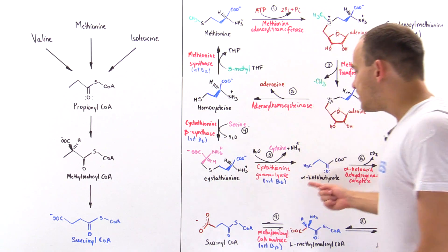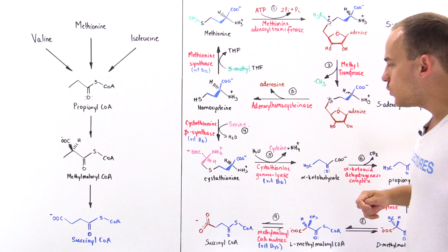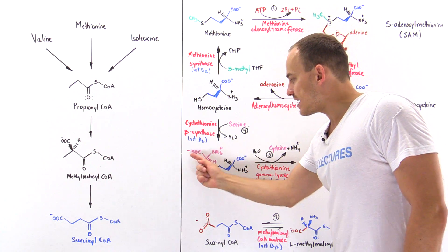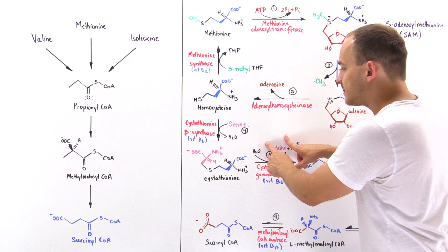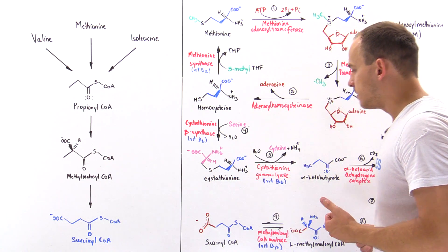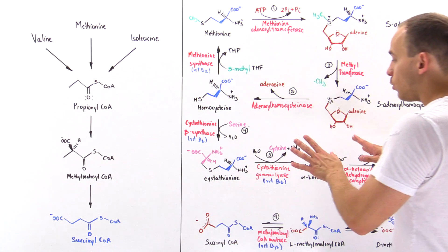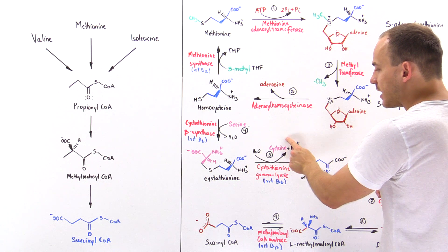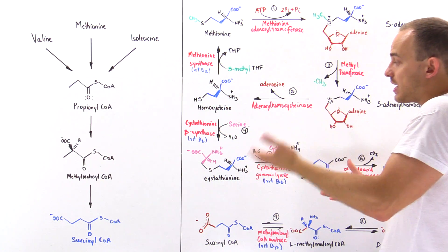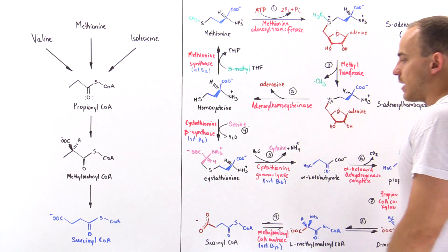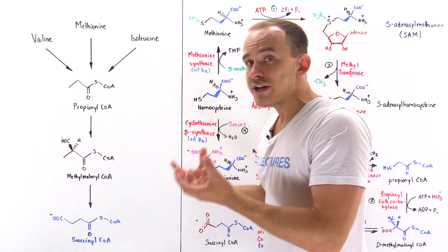Cystathionine is then cleaved by the enzyme cystathionine gamma-lyase. A water molecule is used to remove the cysteine that is formed — we essentially remove this portion including the sulfur atom, giving us cysteine — and we also remove an ammonium group. This ultimately generates an alpha-ketobutyrate, an alpha-keto acid. Notably, this allows us to generate the cysteine amino acid by metabolizing methionine, giving us a way to generate one amino acid from a different amino acid. This pathway is very rich in important molecules.